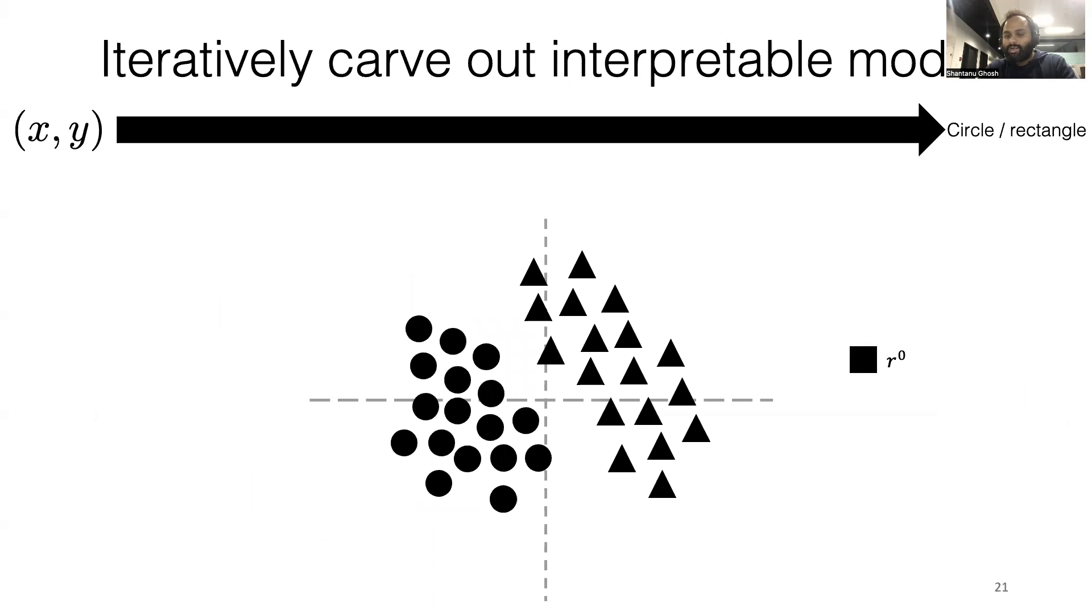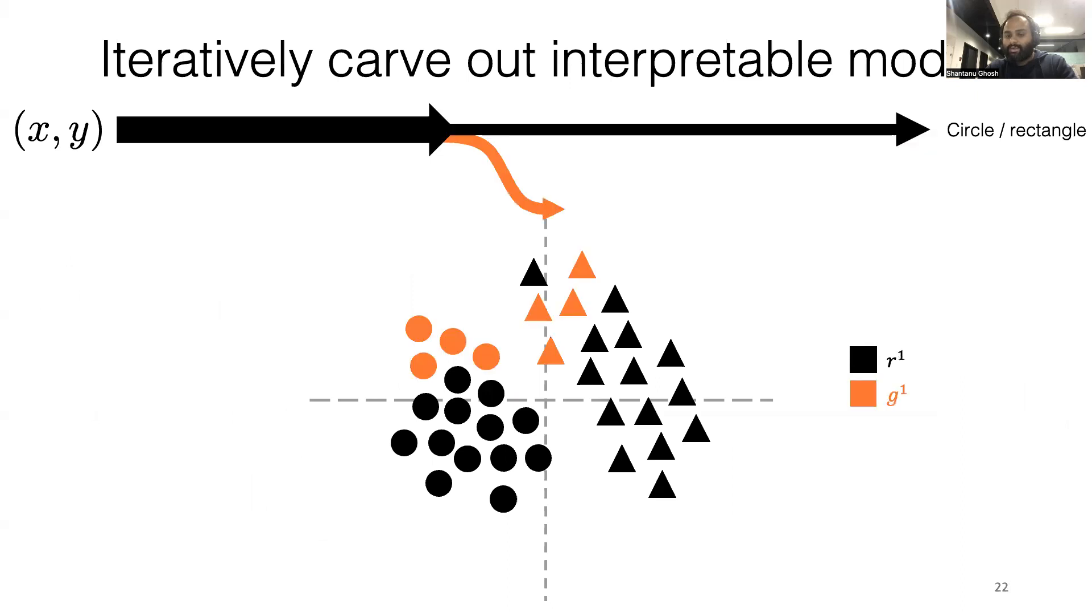Here is an illustrative example of our method. In this example, we aim to classify the shape of an object. The initial black box covers all the samples. Then we extract the first interpretable model G1 from the black box to cover the orange samples.